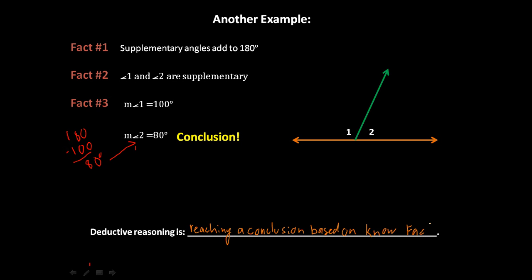And the important thing about this is the known facts. So a fact is that supplementary angles add up to 180. A fact is that baboons like bananas, that kind of thing.